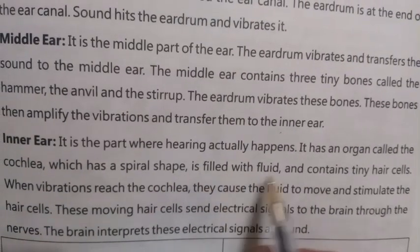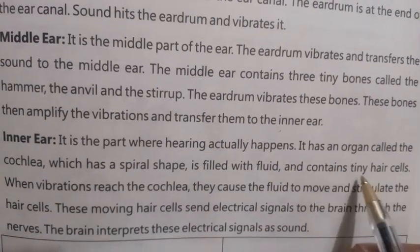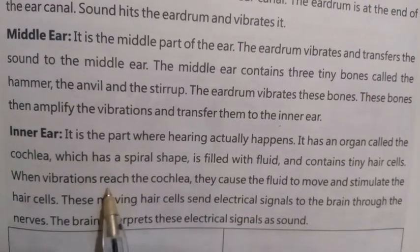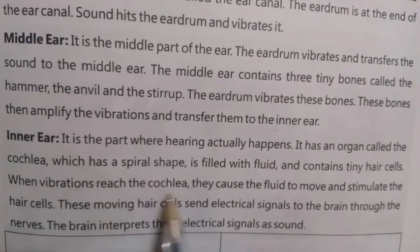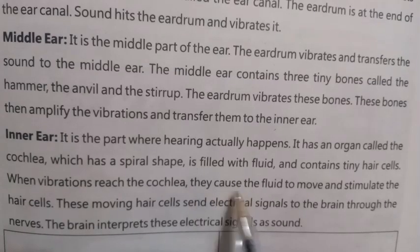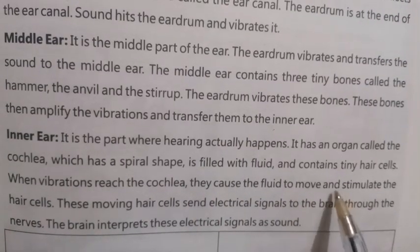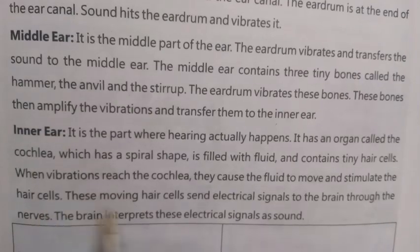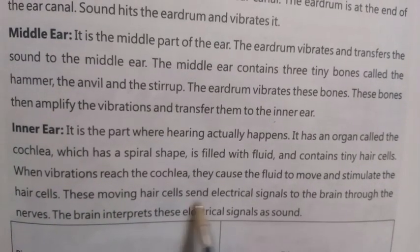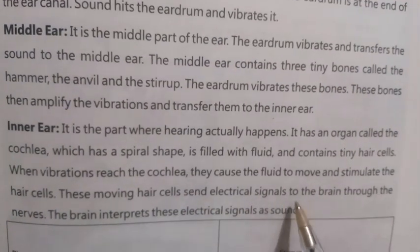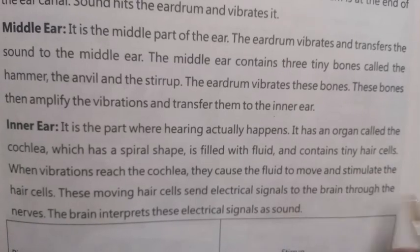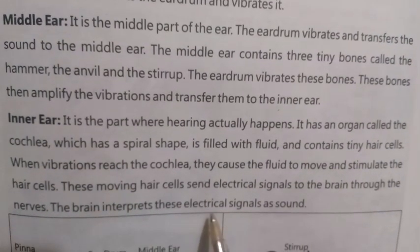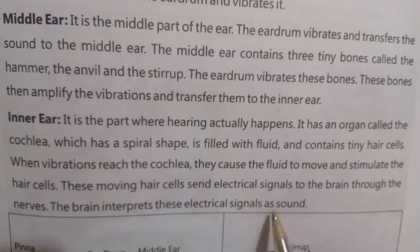The cochlea is filled with fluid and contains tiny hair cells. When vibrations reach the cochlea, they cause the fluid to move and stimulate the hair cells. These moving hair cells send electrical signals to the brain through the nerves. The brain interprets these electrical signals as sound.